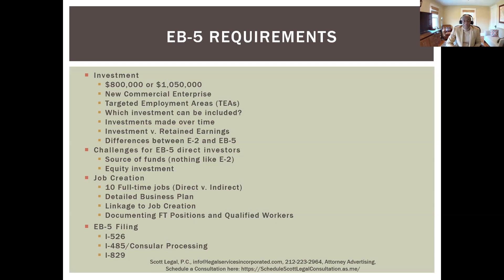Another key point: the investment cannot be retained earnings. If someone has an E-2 business, invested $100,000, the business generates $2 million with $1 million in profit, and that profit sits in retained earnings and is then spent on equipment and staff — that million dollars is not investment. Investment has to come from outside the company and from your personal funds. This is very different from an E-2, which doesn't have that requirement.